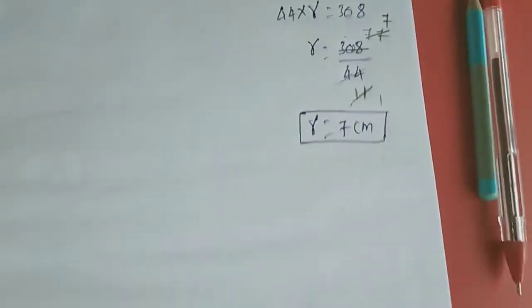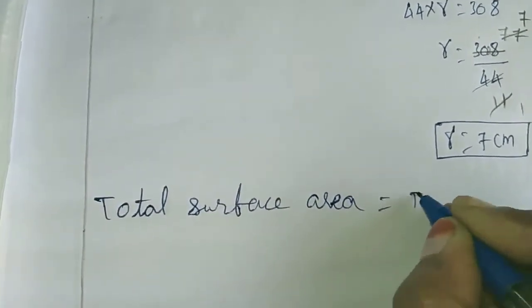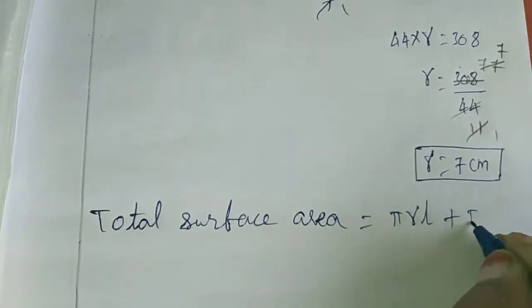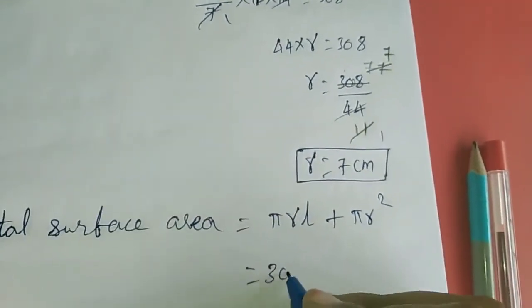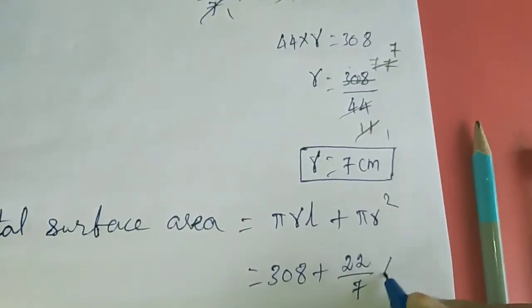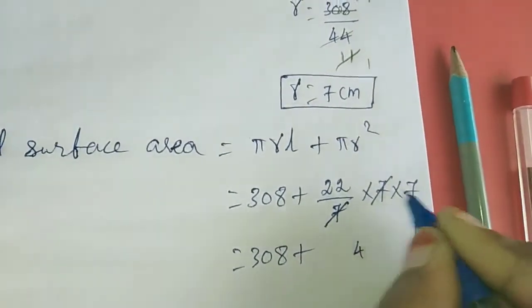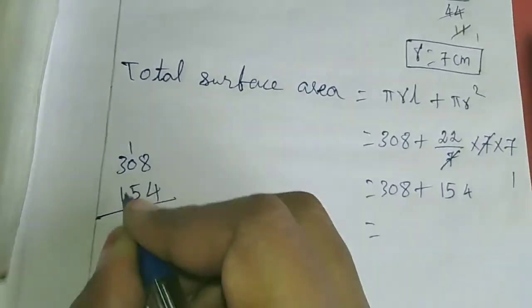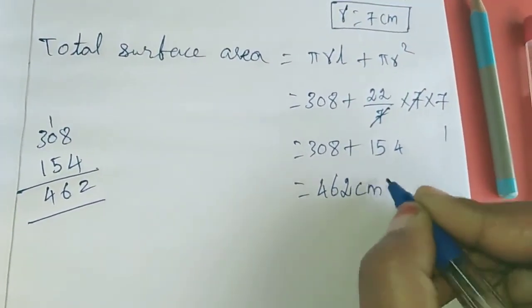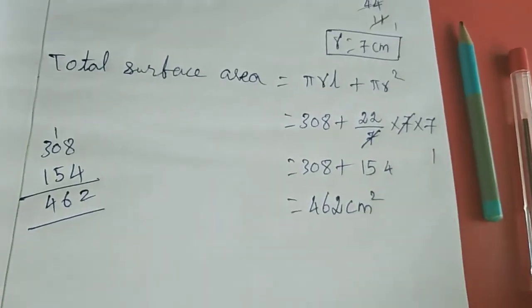Next we want to find total surface area. Total surface area equals pi r l plus pi r square. Since pi r l is the curved surface area value, that is 308. So 308 plus 22 by 7 into 7 into 7. That gives 308 plus 154, which equals 462 cm square. This is the answer they are asking. Up to this, 13.3 three sums are completed. In the next class we will move to the 4th sum. Complete the homeworks. Thank you dears.